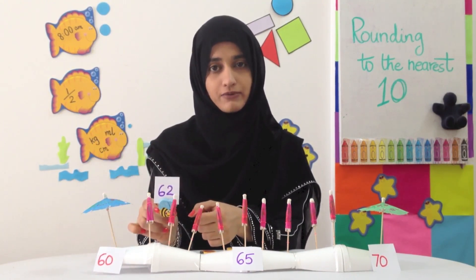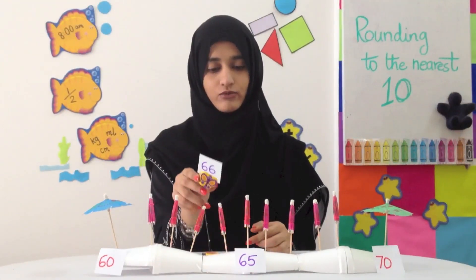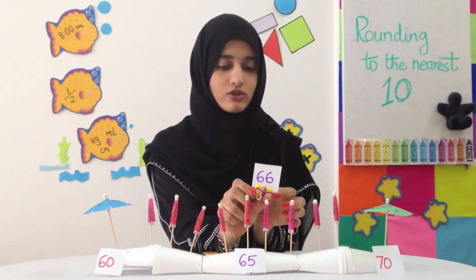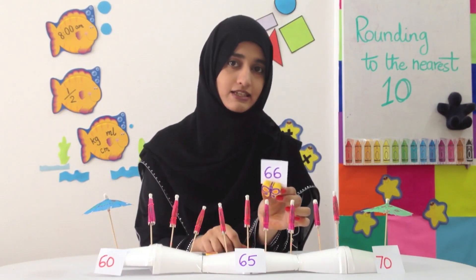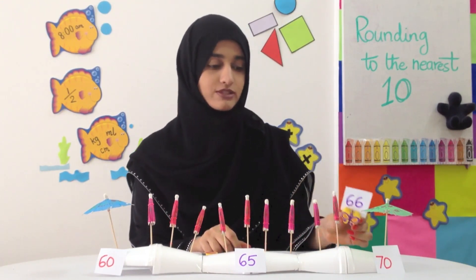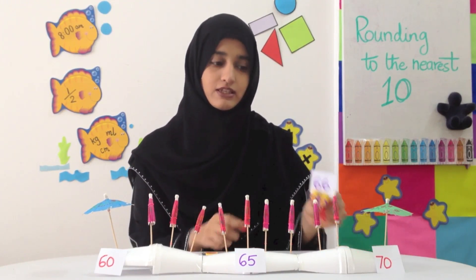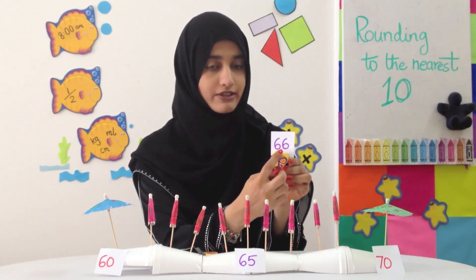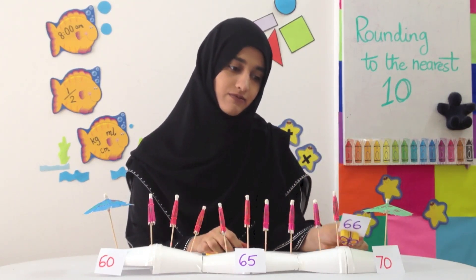So we rounded it to the number 60. The butterfly was on number 66 when it started to rain, and so the butterfly rushed towards the next umbrella, which was umbrella number 70, to find shade. Again, we can see the number 6 is in the units place — it's more than 5. Therefore, the butterfly went to the next 10. This is rounding up to the nearest 10.